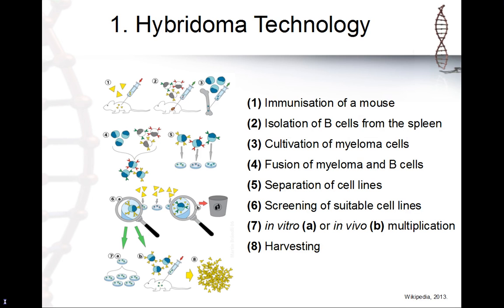We call it hybridoma technology because B cells have a short lifetime — they cannot be passaged indefinitely in cell culture, dying after about 50 or 60 passages. The trick is to merge a myeloma cancer cell with a B cell to make them immortal. They keep growing and producing your antibody, and you can freeze and thaw them repeatedly while they still produce your target antibody.